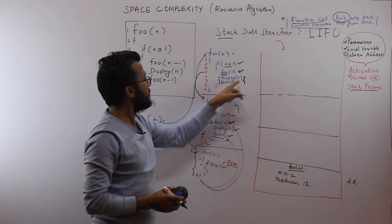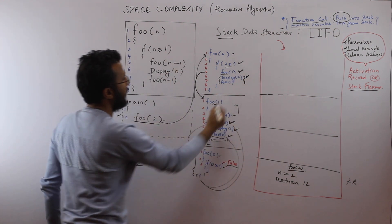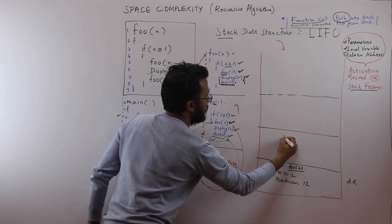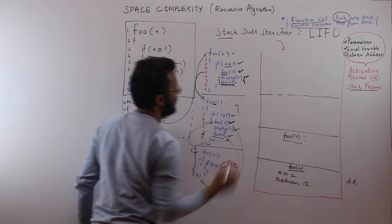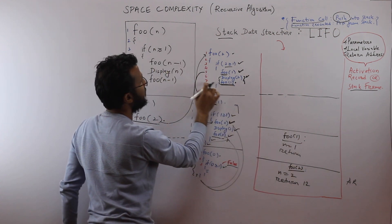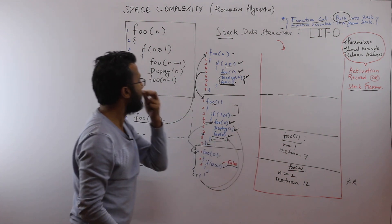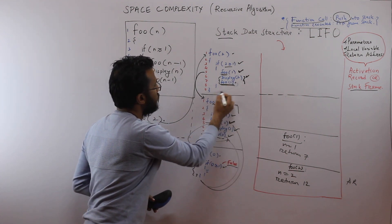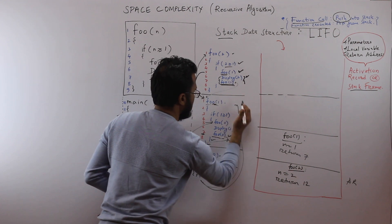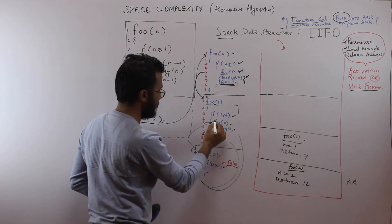Back in foo(2), line 6 executes: display(2) prints '2'. Then at line 7, foo(1) is called again. A new activation record is pushed for foo(1): n=1, return address to line 7 of foo(2). Control goes to foo(1); condition 1 >= 1 is true, so it proceeds inside again.